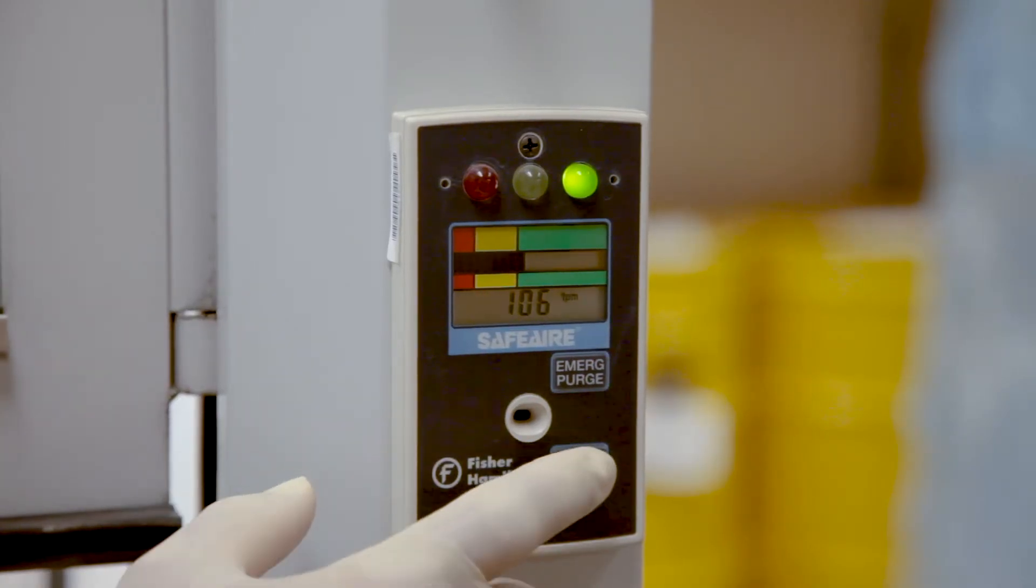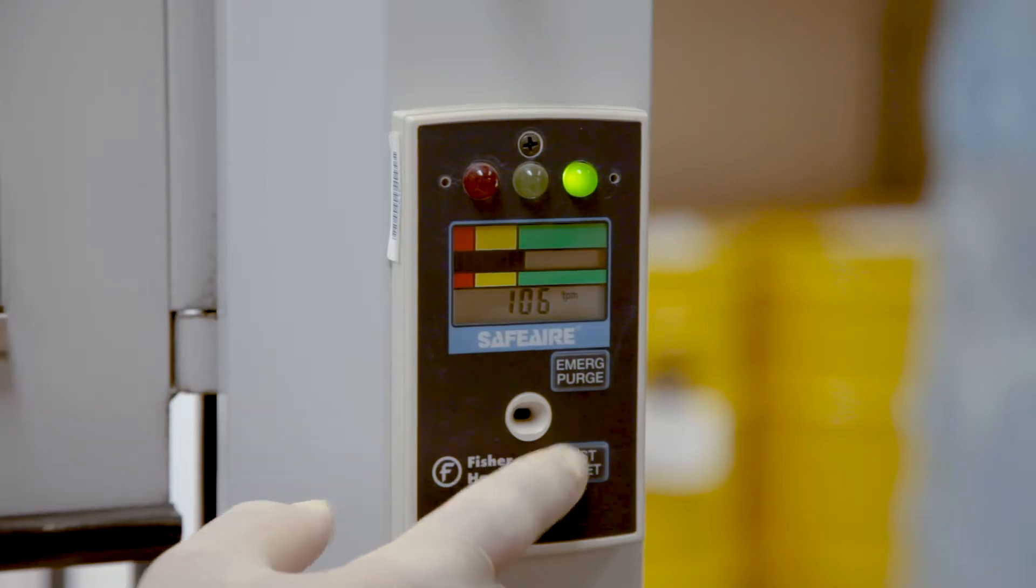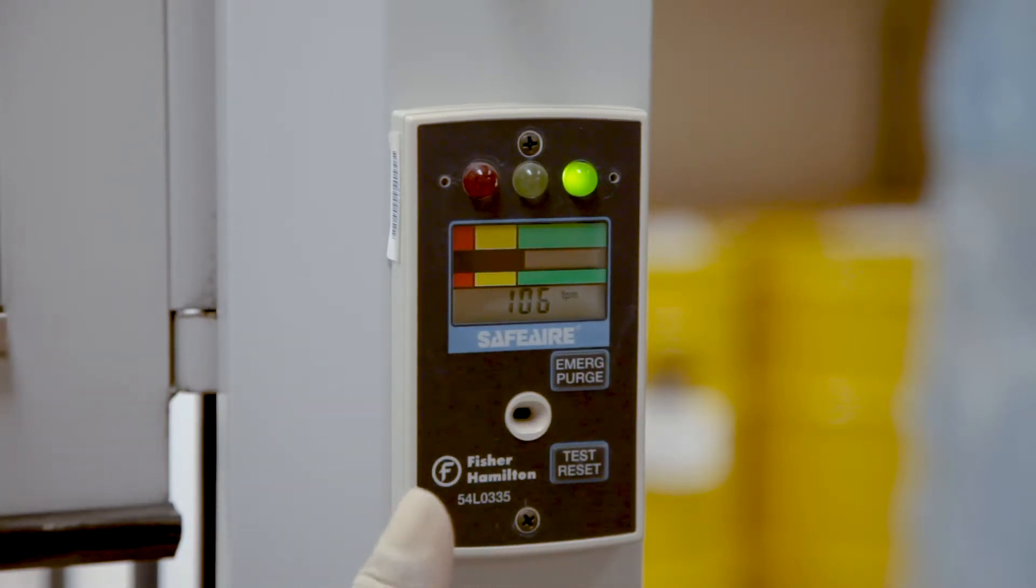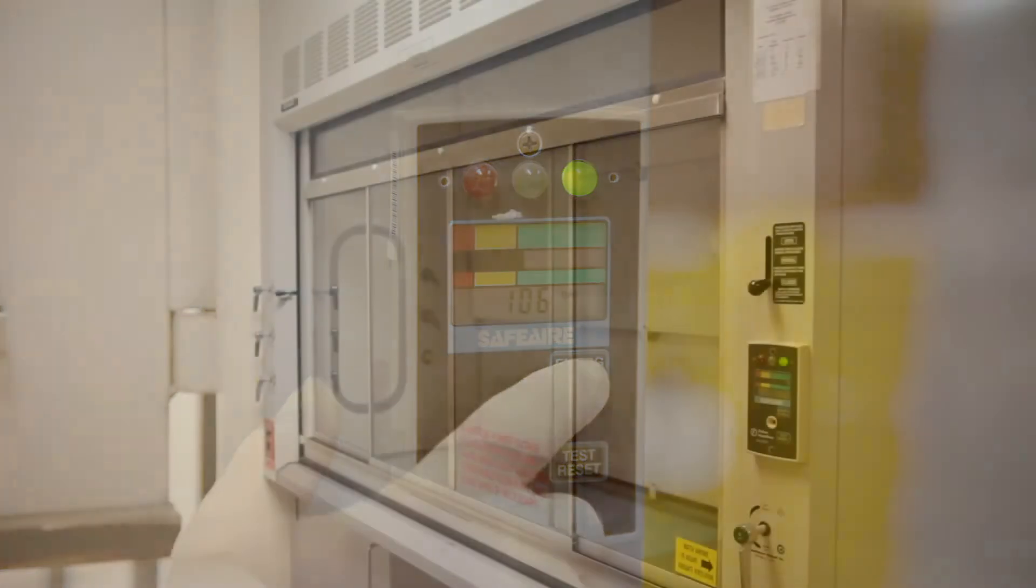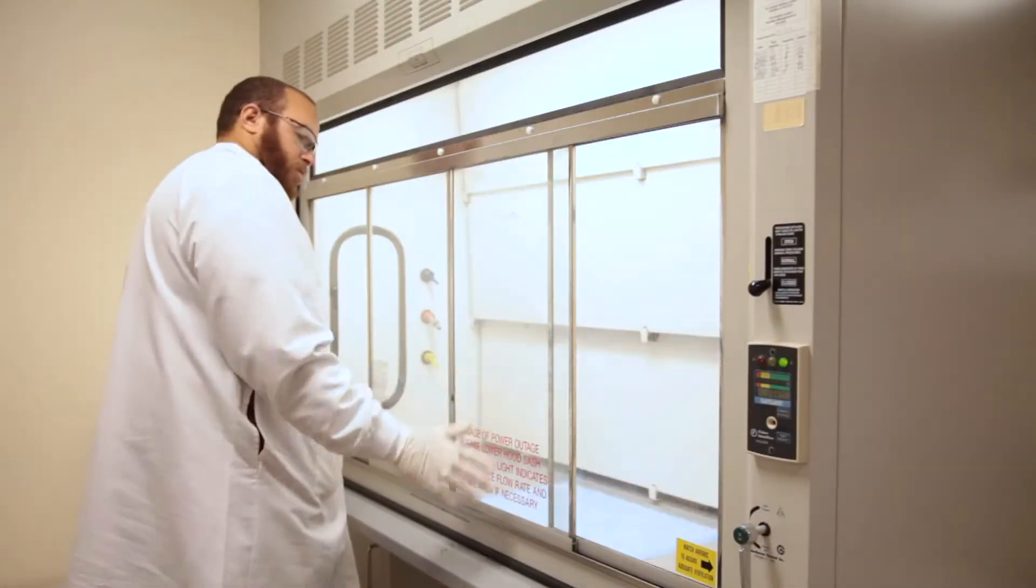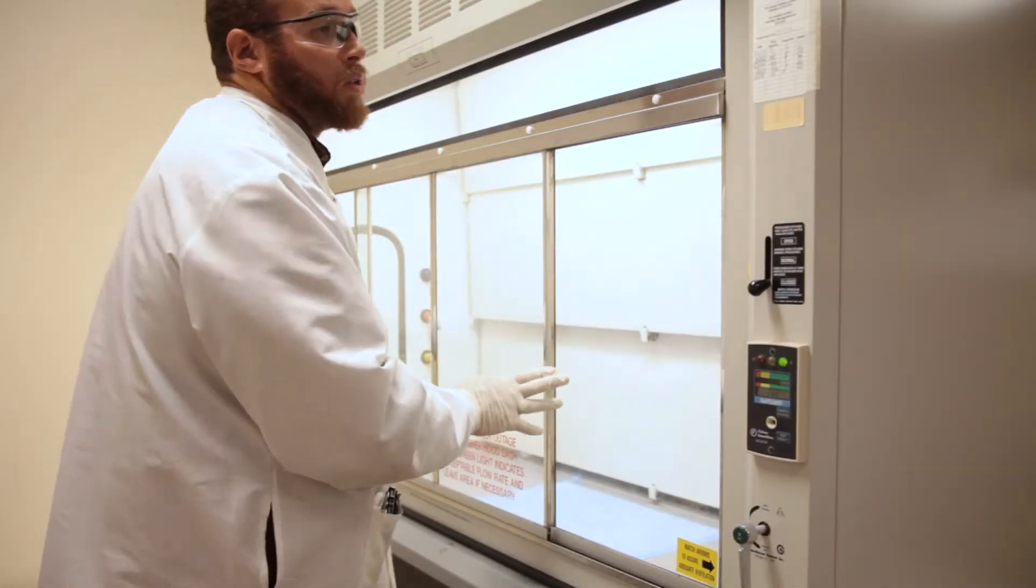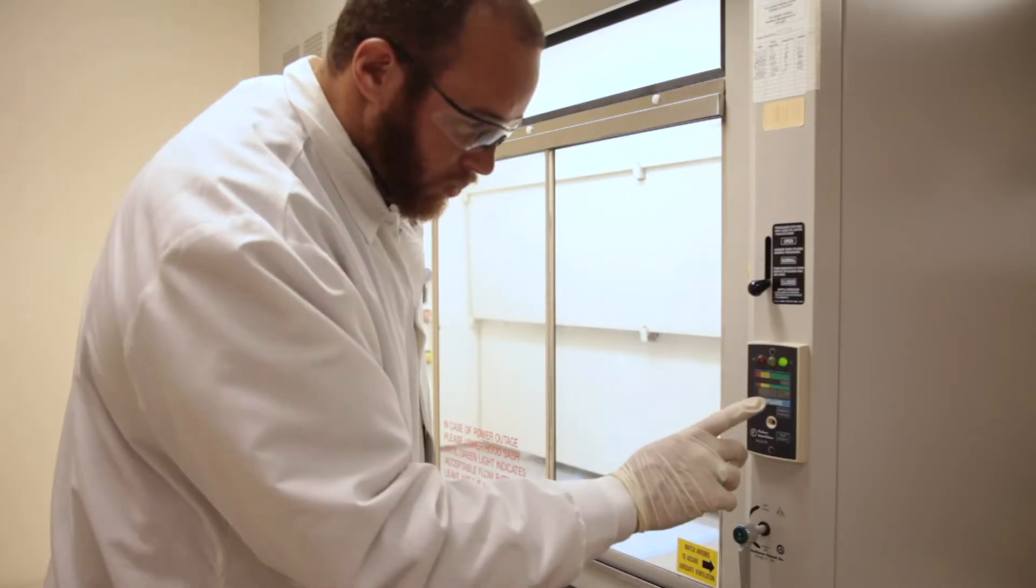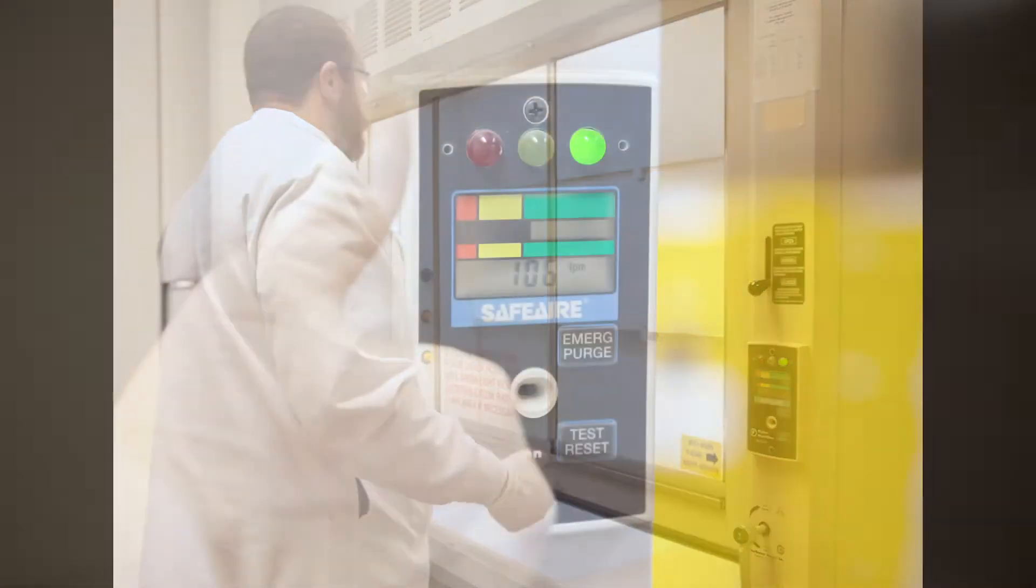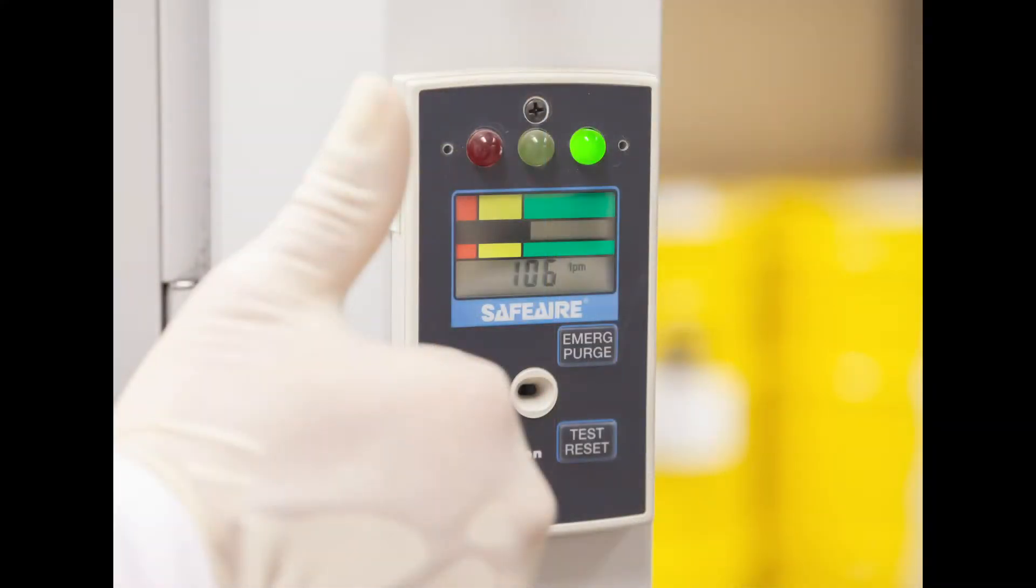The digital airflow display monitor shows the face velocity of the fume hood. This type of device commonly has an audio and visual alarm. Always verify proper function of the hood before use by checking the fume hood monitor or alarm before beginning your work. Your fume hood should be operating with a face velocity of 100 feet per minute or greater.